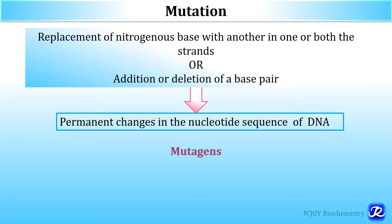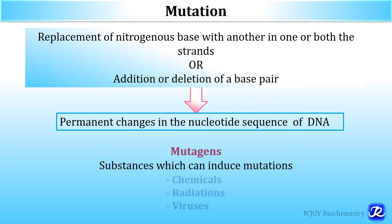Mutagens are substances which can induce mutations and are collectively known as mutagens. These mutagens can be chemicals, radiations, and viruses.